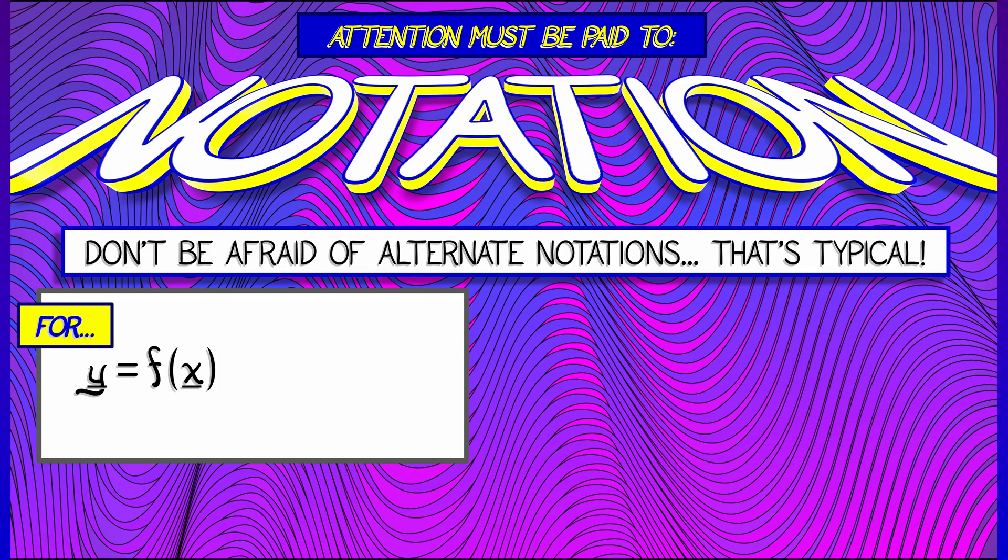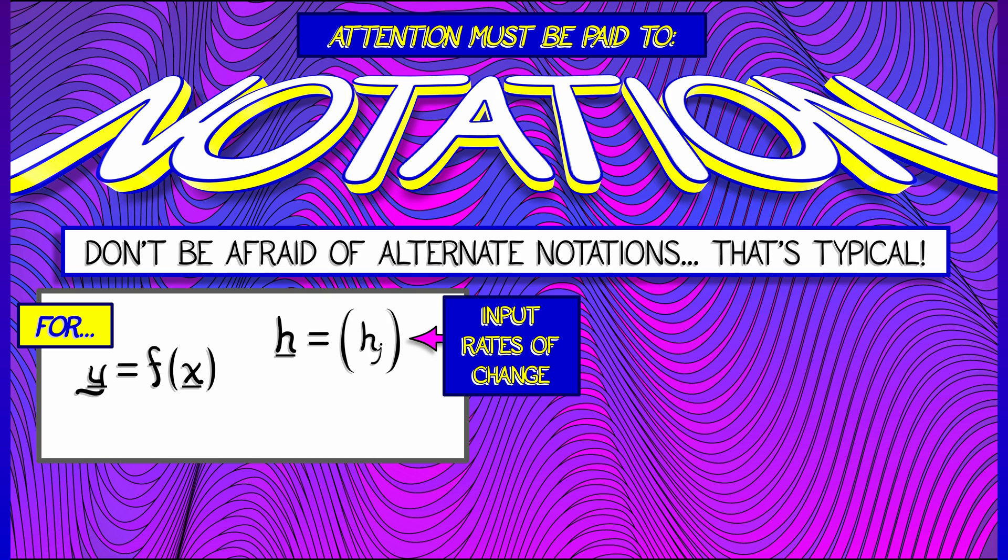Now, the standard notation I'll use is that when you've got a function y equals f of x, we use a vector to encode the rates of change of the inputs. Maybe I'll call that vector h, and its components are indexed by the inputs.